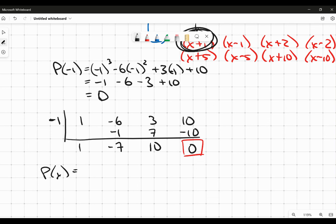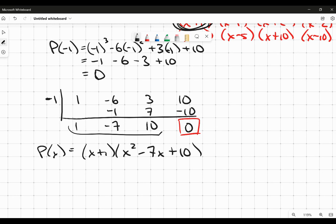So now my polynomial looks like this. I know that x plus 1 is a factor. And after dividing it out, I know that I've got x squared minus 7x plus 10. Now, that is a quadratic that I'm hoping I should be able to factor relatively easily.